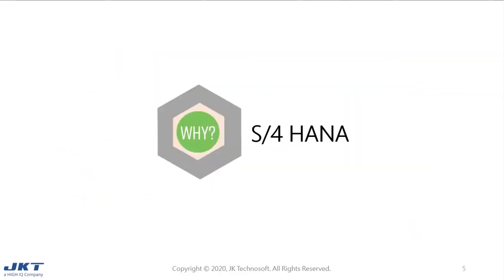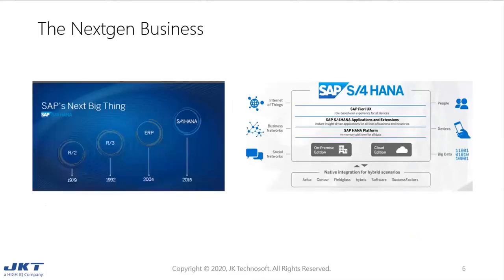Let's first talk about why S4HANA. In this slide, we can see how SAP has evolved over the years to rebuild the business suite for the digital world. In 1979, SAP invented ERP and came up with SAP R2. R stands for real-time. SAP built standard business software based on mainframe technology. R2 could support and integrate major business functions in real-time and had the capability to handle multi-country and multi-currency implementations.